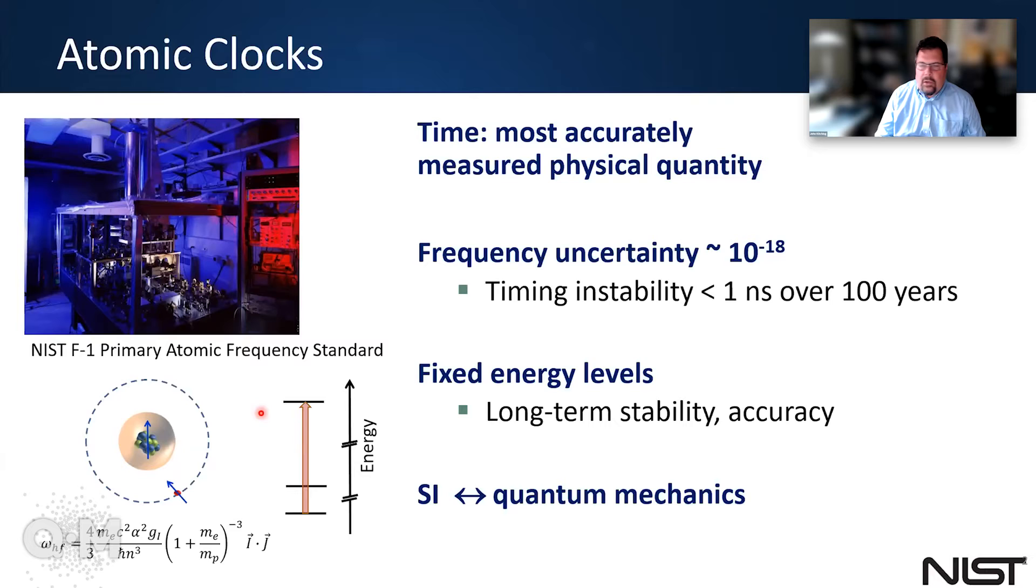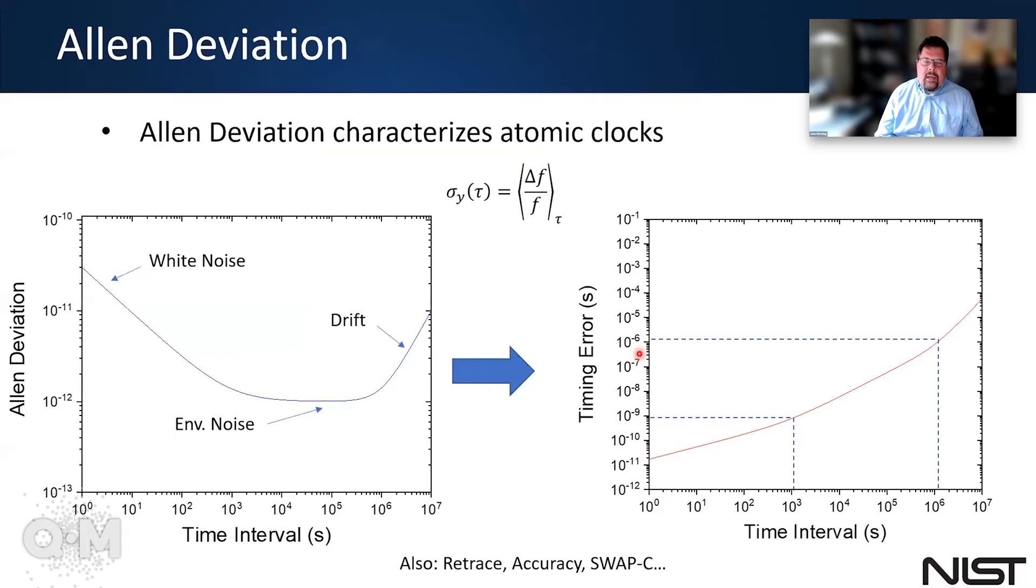And so if you build a clock based on rubidium here or in Europe or wherever, the frequencies that you get are basically exactly the same. And this is part of the reason why the SI second now is defined in terms of transitions between various energy levels in atomic systems.